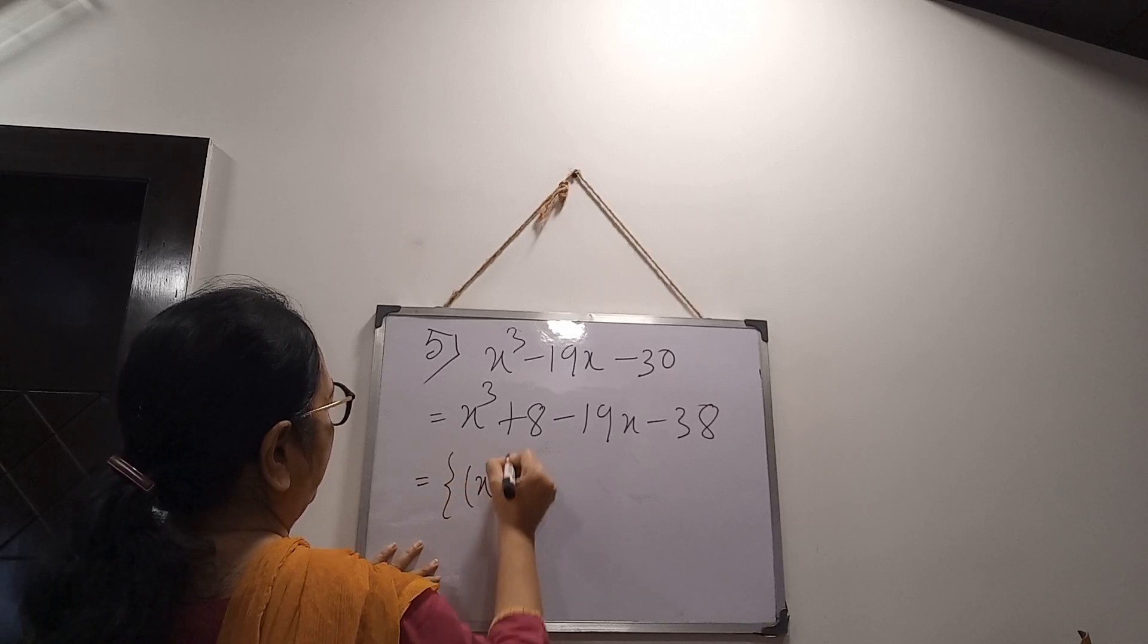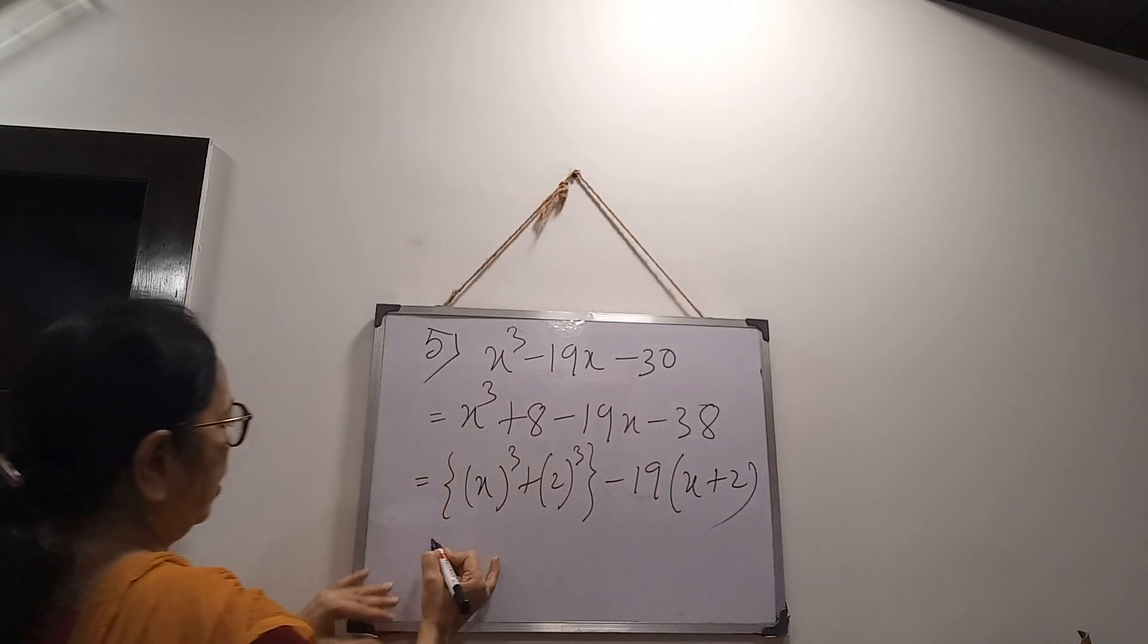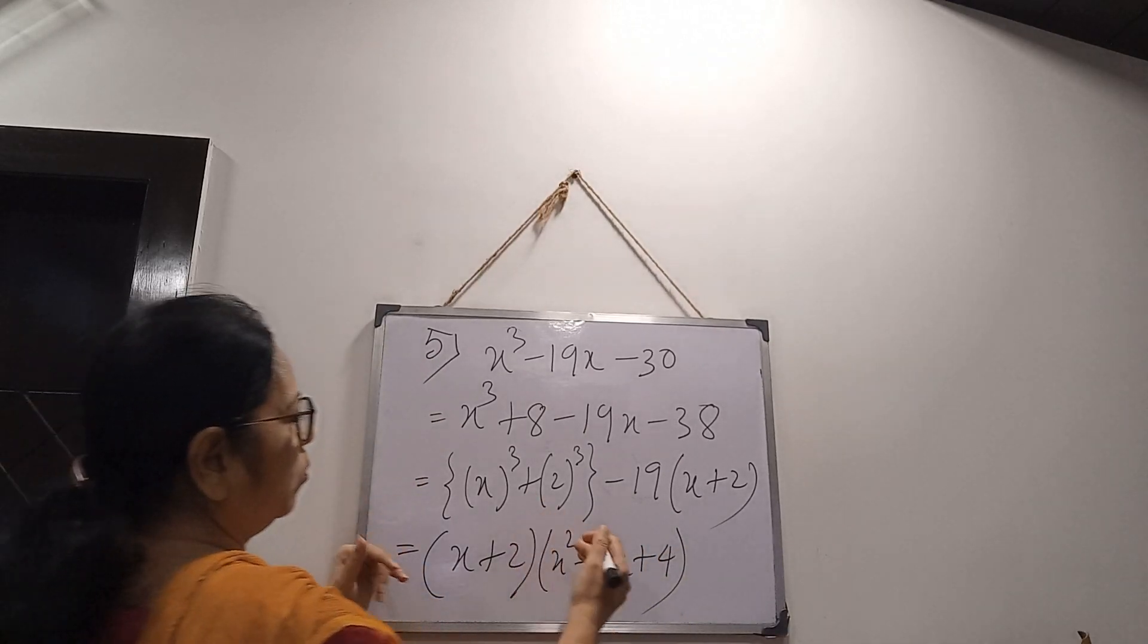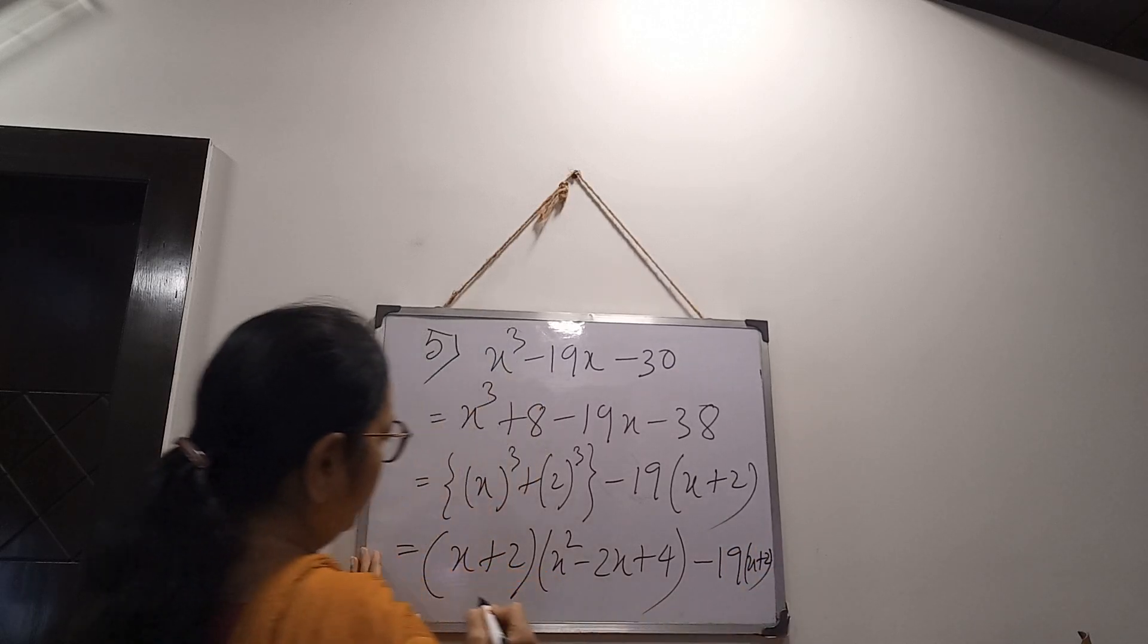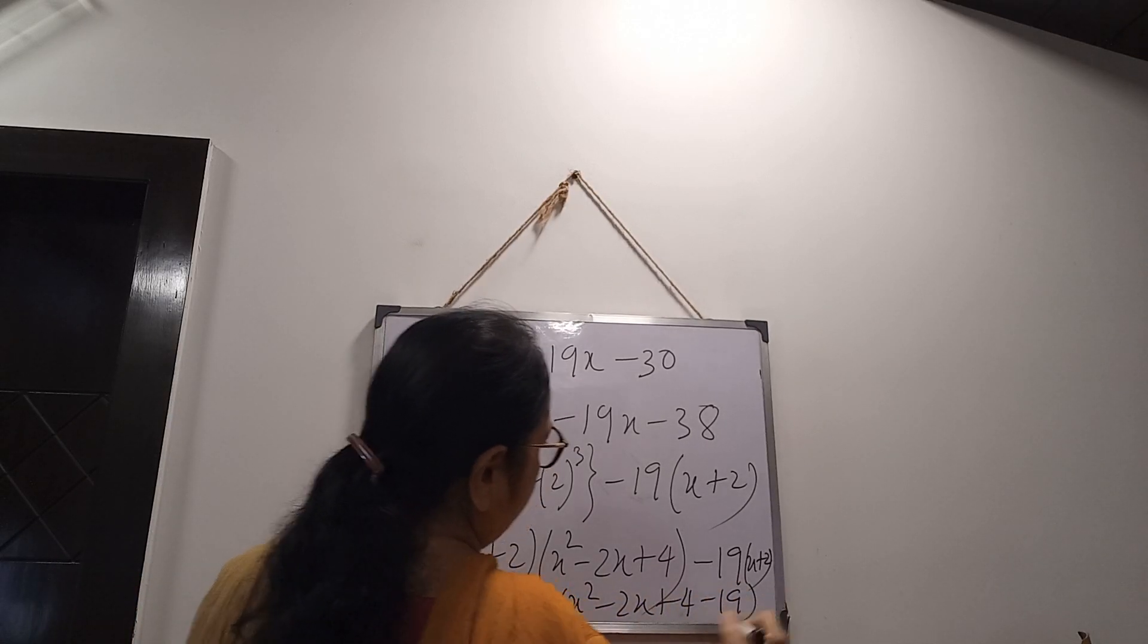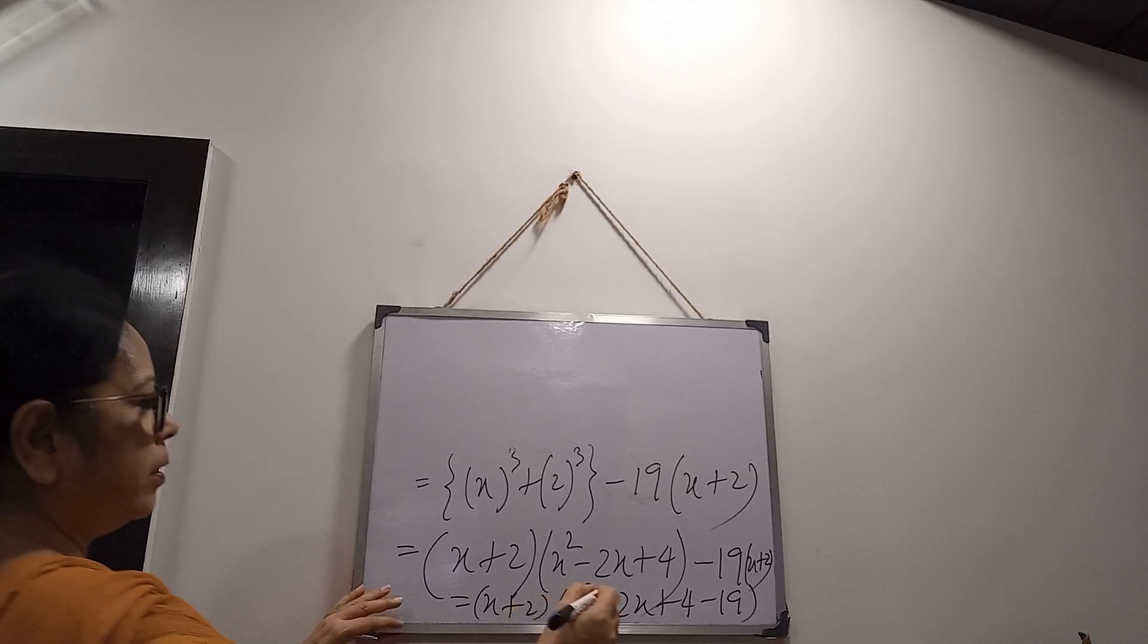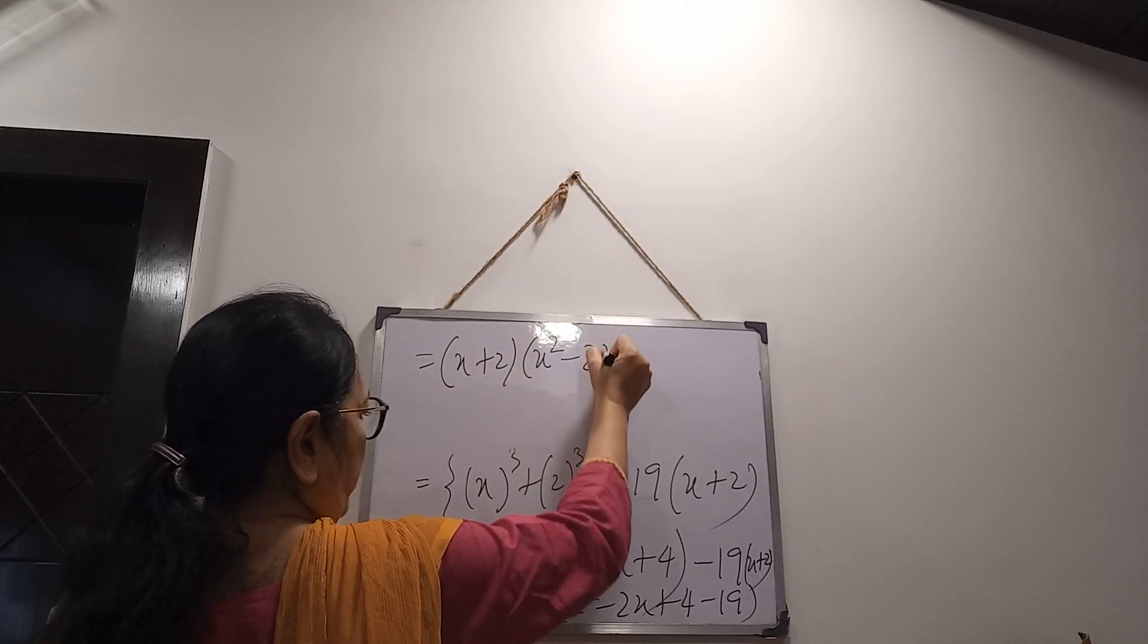Now, this is x³ + 8 means 2³ and minus 19 take common x + 2. Again, it is formula a³ + b³: a + b into a² - ab + b². If you want, you can show one more step here. Before this, one more step you can show: minus 19(x + 2). Now x + 2, we have to take common: x² - 2x + 4 - 19. Then next step, minus 19 means plus 4 minus 19. So we will make it minus, it is becoming minus 15. x + 2, x² - 2x - 15.